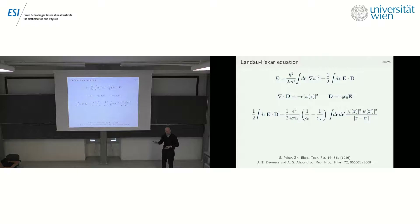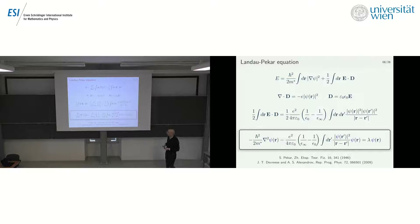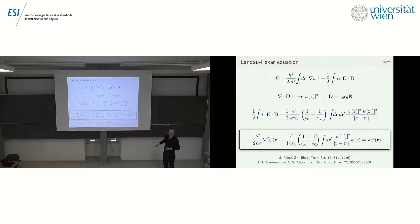One does a variational minimization with the normalization constraint on the wave function. The result is an equation that looks a lot like the Schrödinger equation, except instead of a standard potential, you have something more complicated — a non-linear equation of third order in the wave function. This is called the Landau-Pekar equation, which is well known.